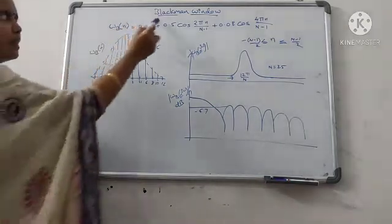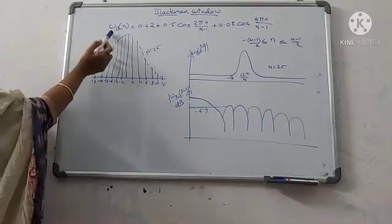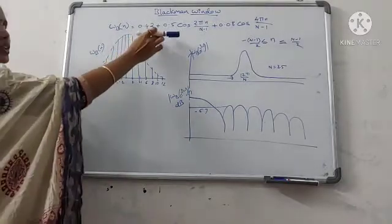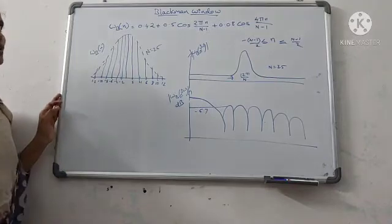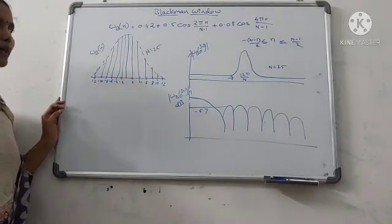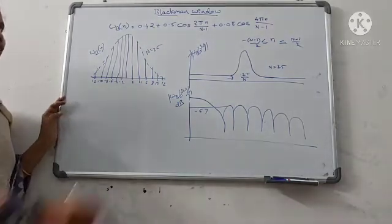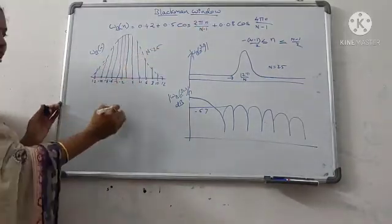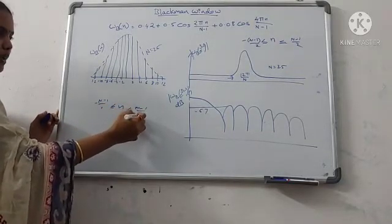The next window technique is the Blackman window technique. The Blackman window, represented as W_B of n, has the equation: 0.42 plus 0.5 cos(2πn / (N−1)) plus 0.08 cos(4πn / (N−1)). We take capital N equal to 25, with small n limits between minus (N−1)/2 and (N−1)/2.